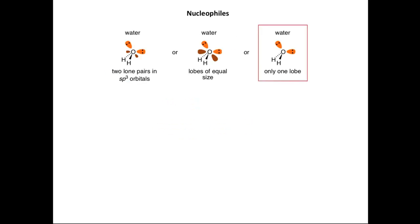Let's look at some nucleophiles and the orbitals we associate with them. The first example is water. Oxygen has two lone pairs, which are the nucleophilic sites in water. Those two lone pairs are in sp3 orbitals, and we can draw those orbitals with one lobe larger than another. Occasionally, you'll see the orbitals drawn with lobes of equal size. More commonly, just one lobe is used to represent each orbital — this lone pair and this lone pair — and that's the representation we'll use in this presentation.